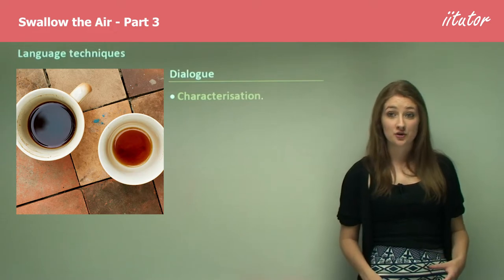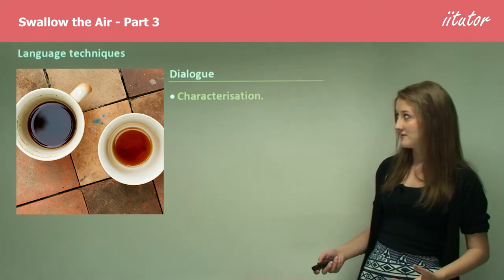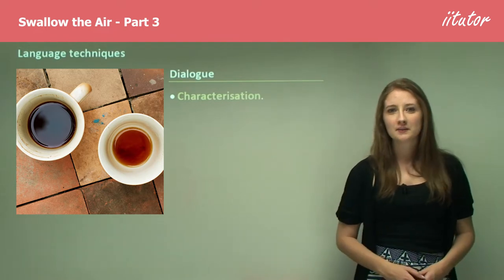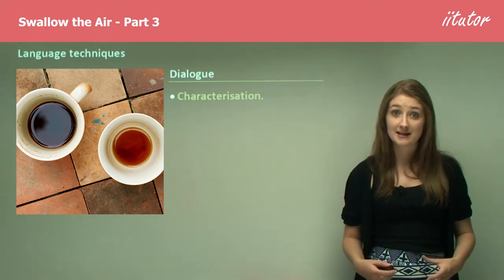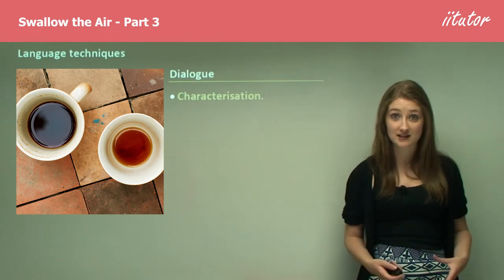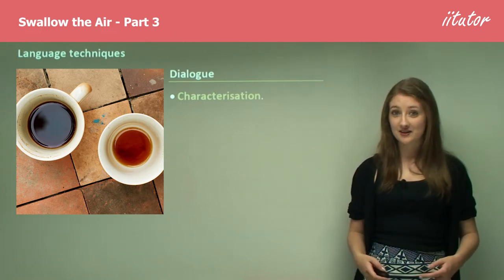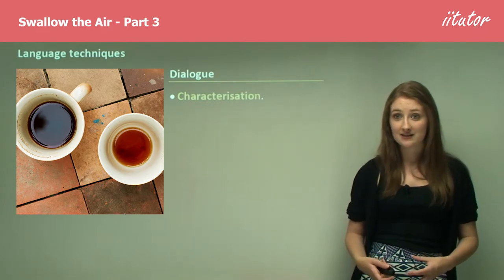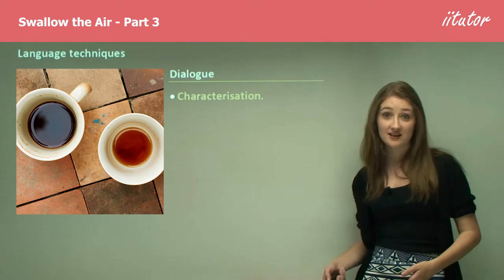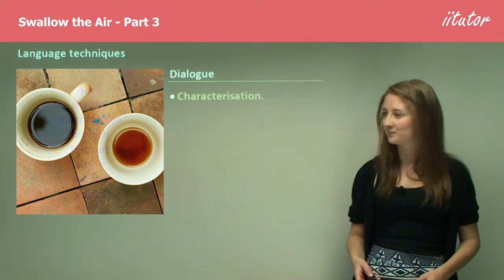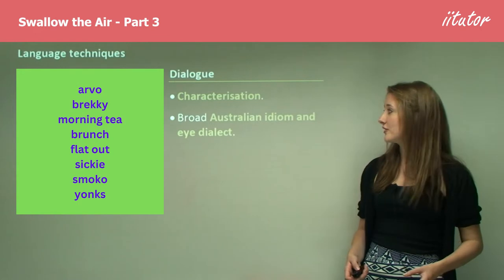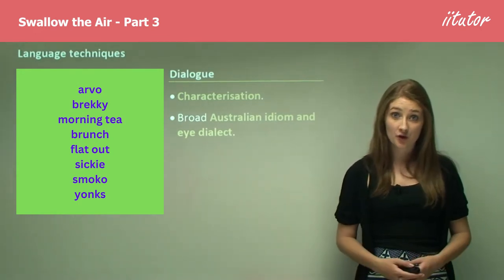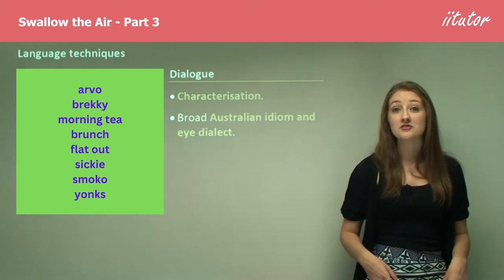The next technique is characterisation, which is definitely achieved through dialogue. Dialogue is quite tricky to write because it's hard to make it seem realistic. However, Tara June Winch definitely achieves realism through her dialogue and through excellent dialogue writing manages to create very distinct characters that we really feel like we can get to know. Her broad Australian idiom and eye-dialect is used throughout.